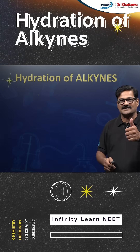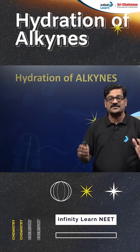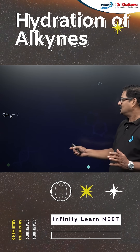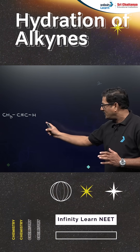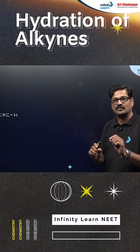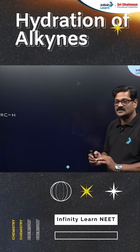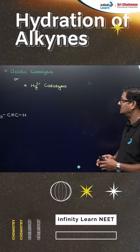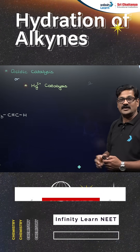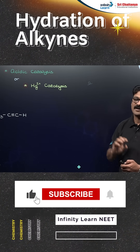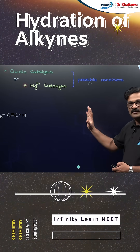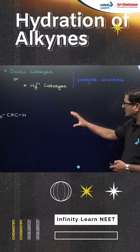Let's discuss the hydration of alkynes. Consider propyne — its hydration is a little more difficult compared to the corresponding propene, because the conditions required here involve acidic hydrolysis and mercury(II) ion (Hg2+), which acts as a catalyst. These are the probable conditions.